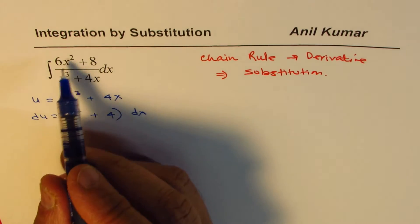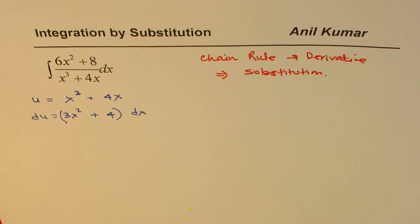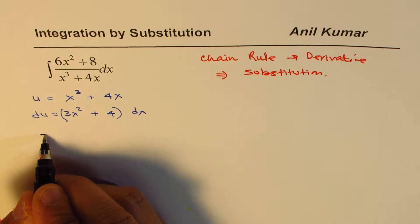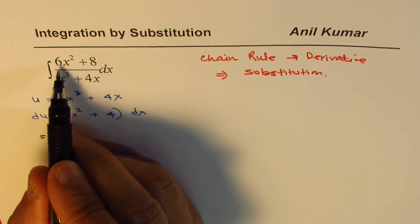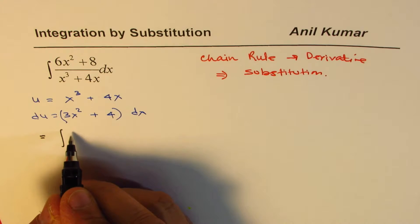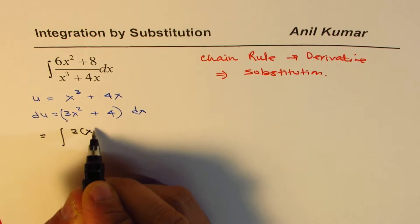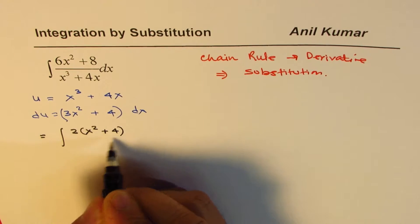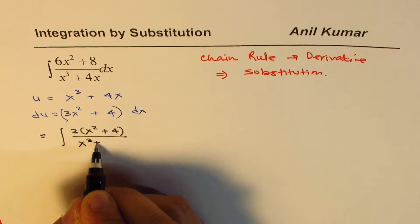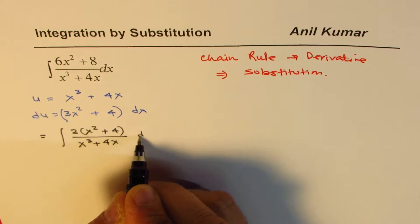But instead, what we can do is rewrite the integral. I can take 2 common. So when I take 2 common, I get x squared plus 4 over x cubed plus 4x dx.